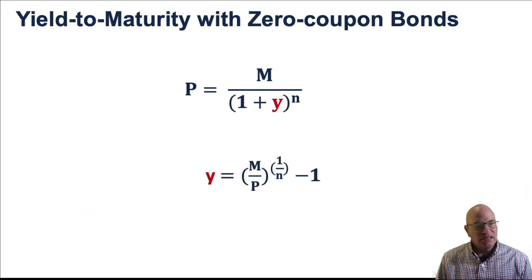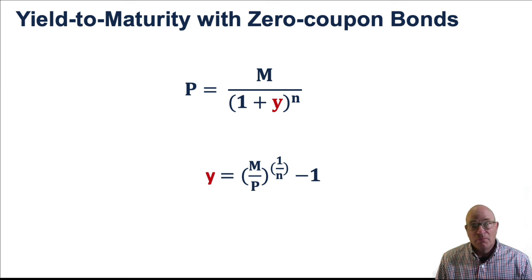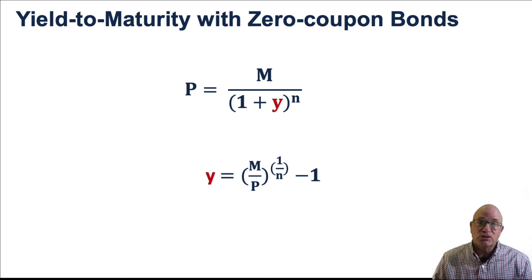We can also state the yield to maturity in the zero-coupon bond case. The bond price is stated as a function of the par value and the yield to maturity. We rearrange terms, and you can see the rearranged equation at the bottom. Principal strips are going to come into play in the structure of interest rates, and we will talk about that in future modules.